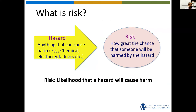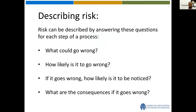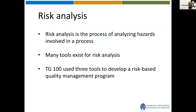Before going further, we should define what risk is. Risk is the likelihood that a hazard will cause harm, and a hazard is anything that can cause harm. All the processes we do in the clinic involve a lot of hazard, and as professionals it is our job to prevent these hazards from reaching the patient. You can describe risk by answering four questions: What could go wrong? How likely is it to go wrong? If it goes wrong, how likely is it to be noticed? And what are the consequences?